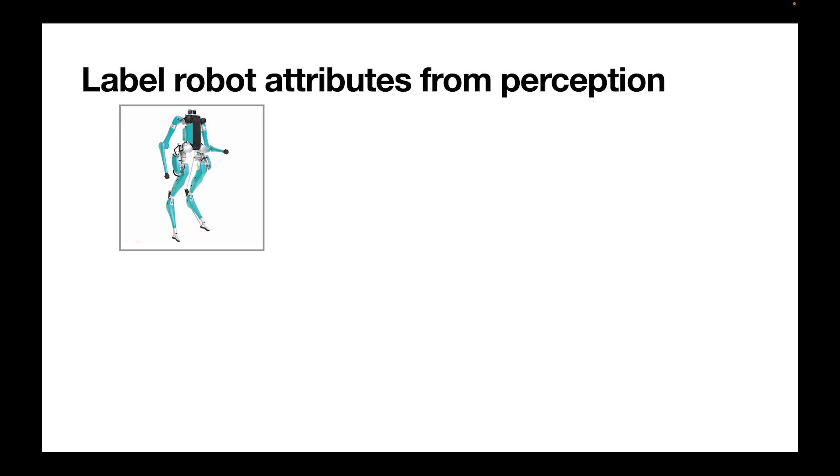The next step was to describe the robot attributes in an open-ended fashion. We therefore used a novel human loop pipeline to label attributes.